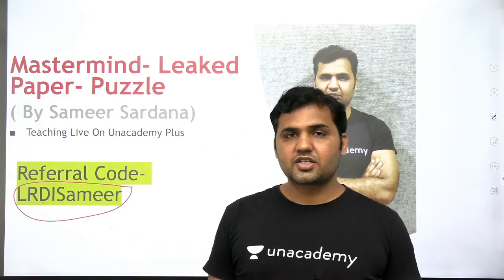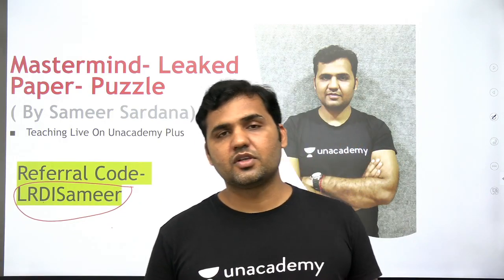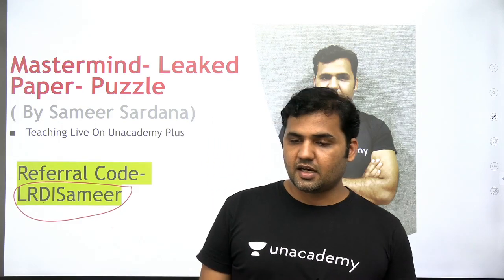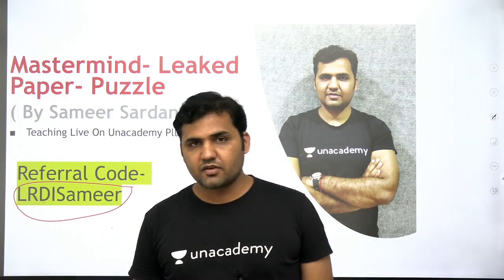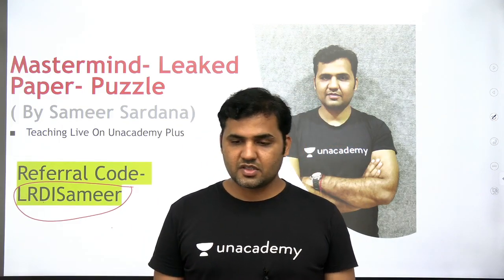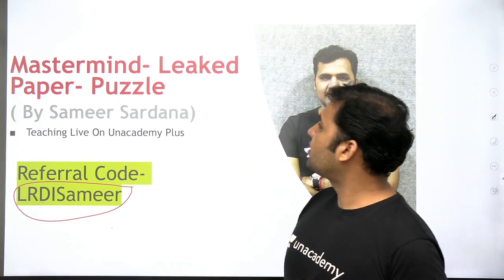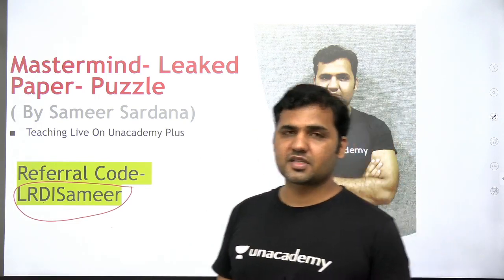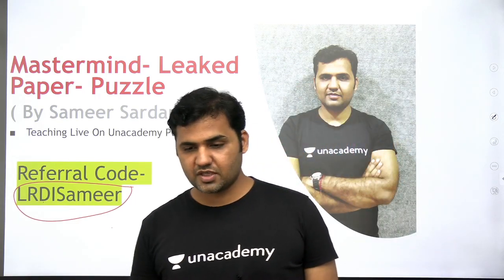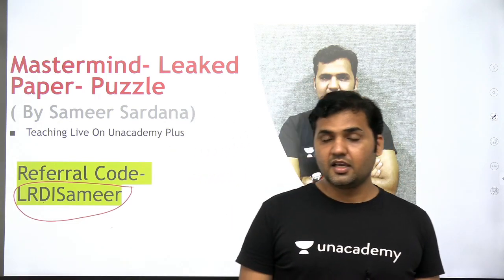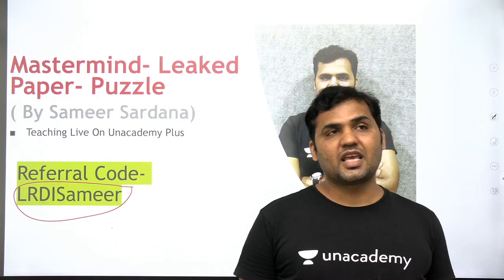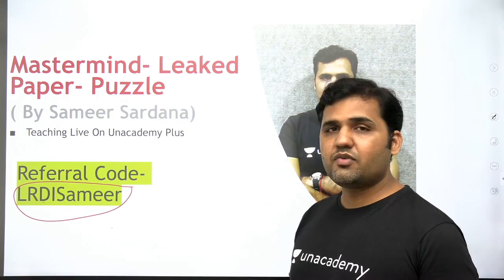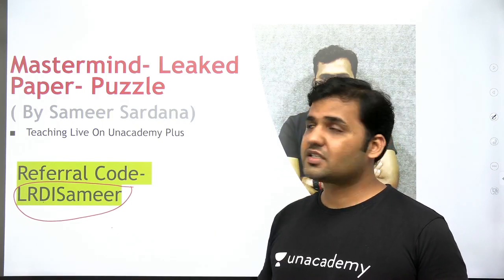In this session today, in this video, we are going to discuss a puzzle which is from the previous year CAT paper. It is called the Mastermind Leaked Paper Puzzle. It came in CAT 2003 and it's a very, very important set.